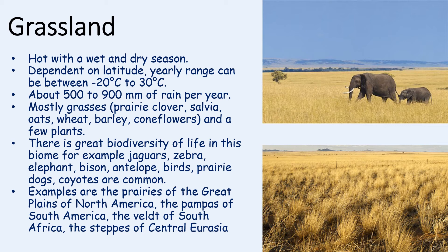Some examples of grasslands are the prairies of the Great Plains of North America, the Pampas of South America, the Veld of South Africa and the Steppe of Central Eurasia.